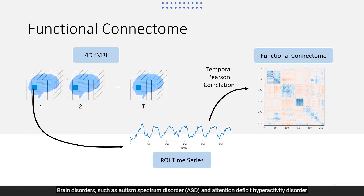Brain disorders such as Autism Spectrum Disorder (ASD) and Attention Deficit Hyperactivity Disorder (ADHD) have been proven to be associated with abnormal resting state functional connectivity.